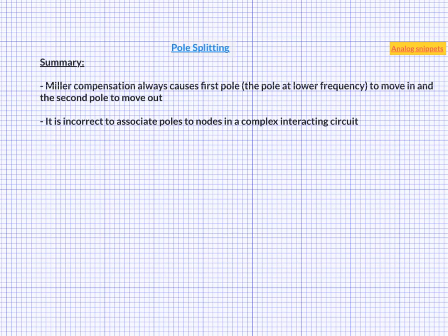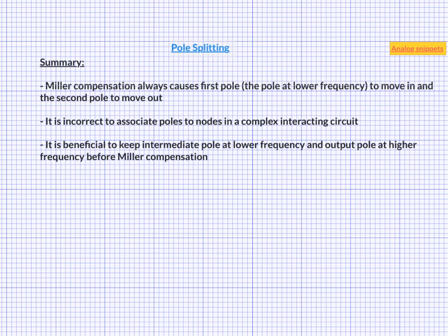Now this discussion does not imply that order of pole does not at all matter in the Miller compensation. In fact, there are many good reasons to keep the pole at intermediate node of the uncompensated amplifier at the lower frequencies.